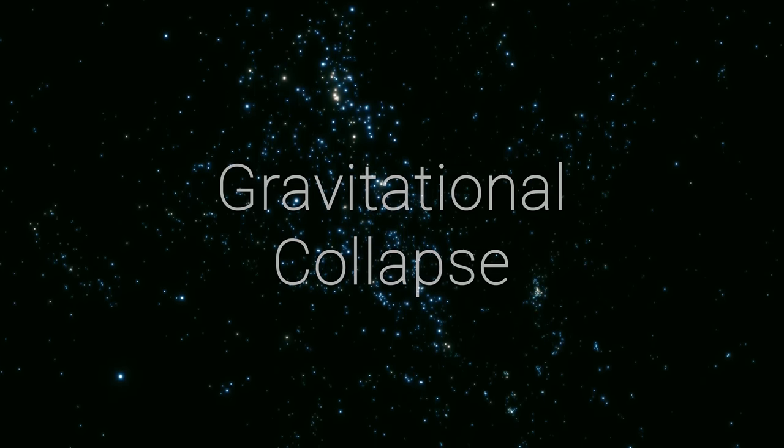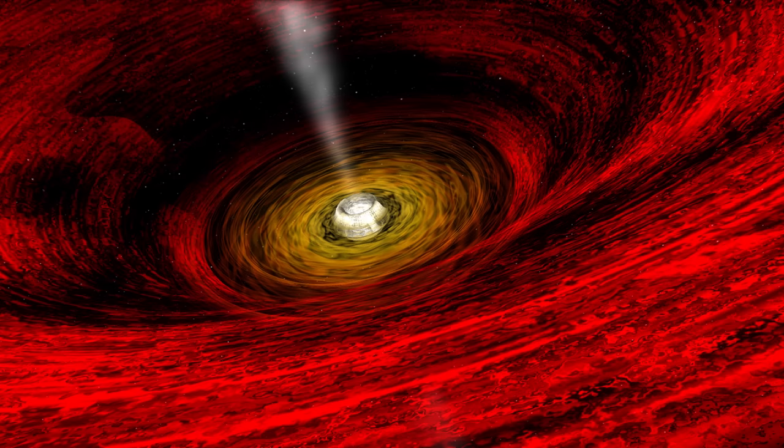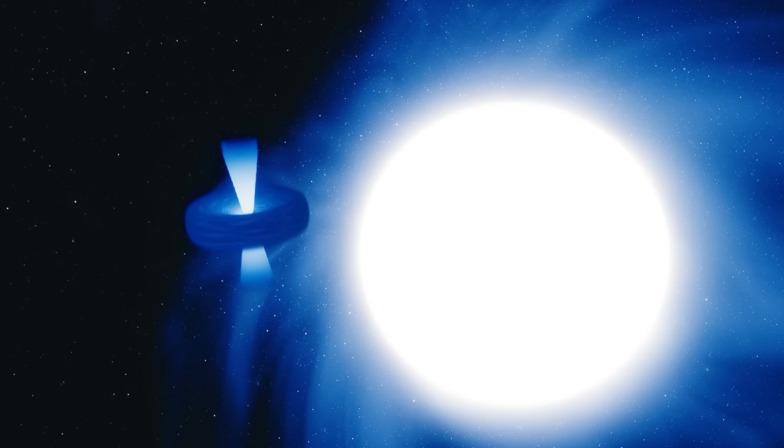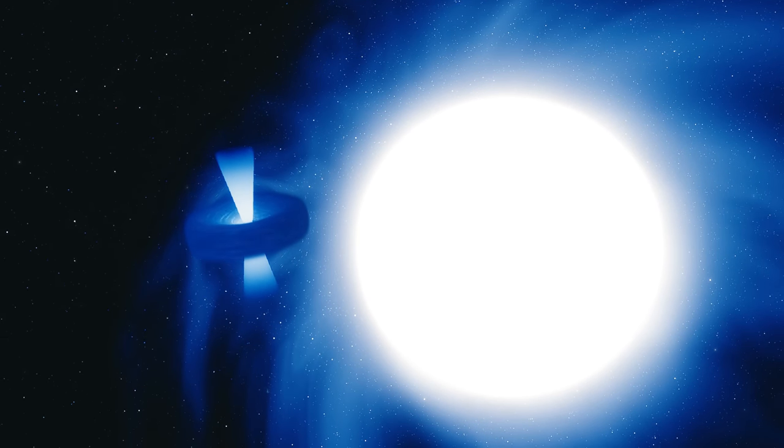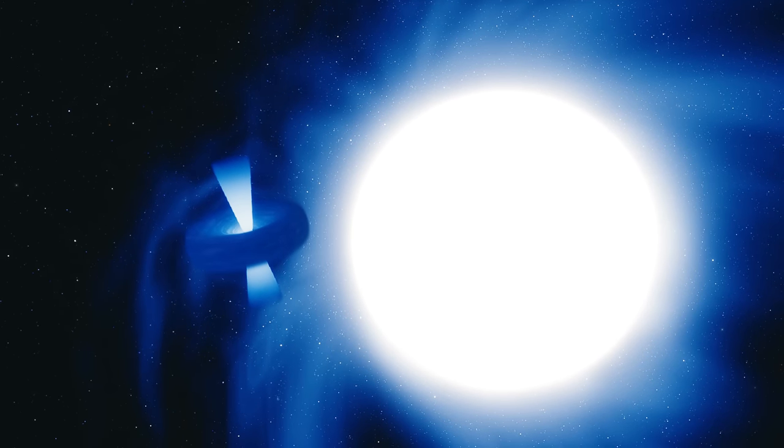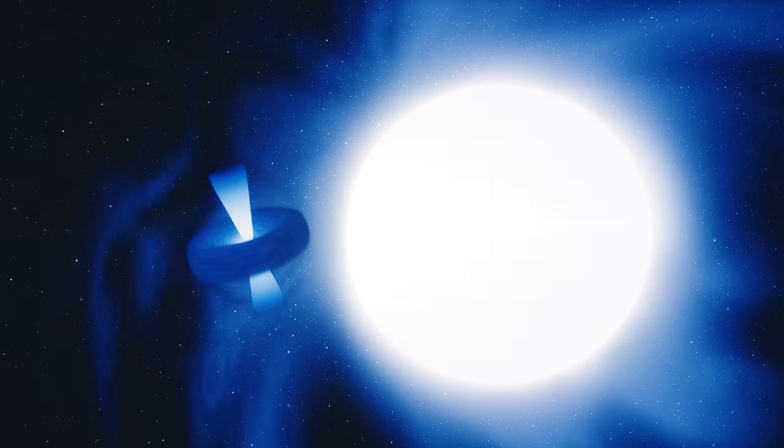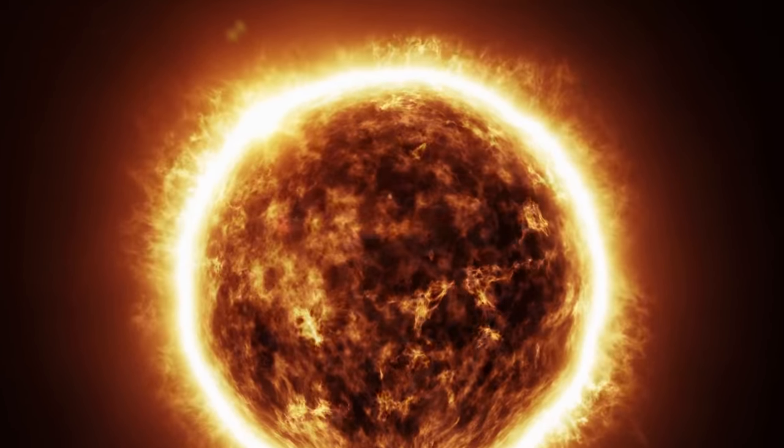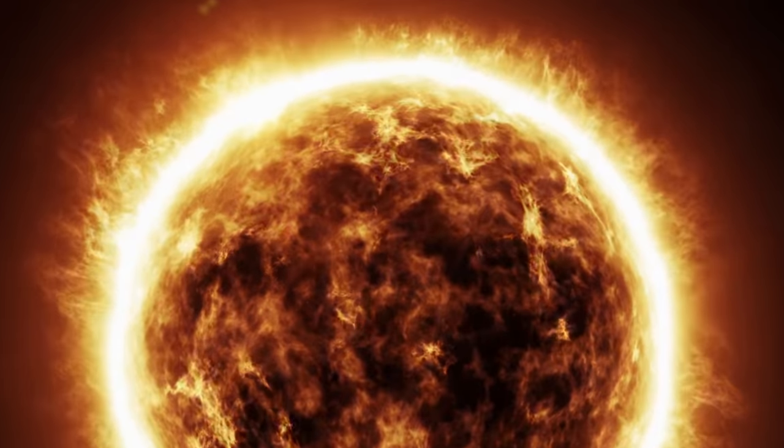Mini black hole binary systems like GRO 1655-40 provide us with compelling evidence that black holes form from the leftover cores of collapsing stars. When a giant star goes supernova, only its outer layers ignite, leaving the inert core exposed, which collapses in on itself in the absence of an energy source.